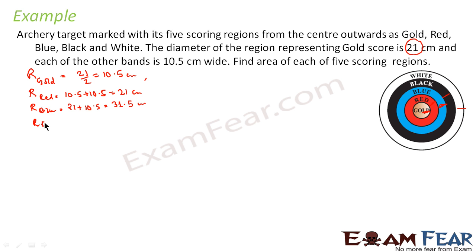Similarly, I will take radius of black, that will become radius of blue plus 10.5, that will be 42 cm. And similarly, radius of white will be radius of black, that is 42, plus 10.5, that is 52.5 cm. So I have all the radius. First thing is done.